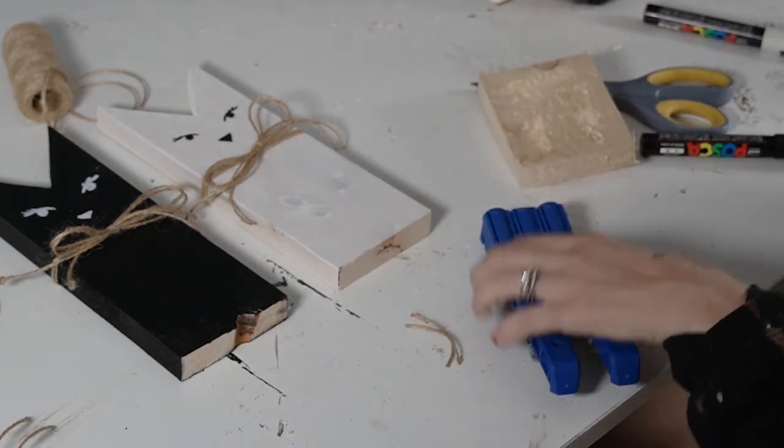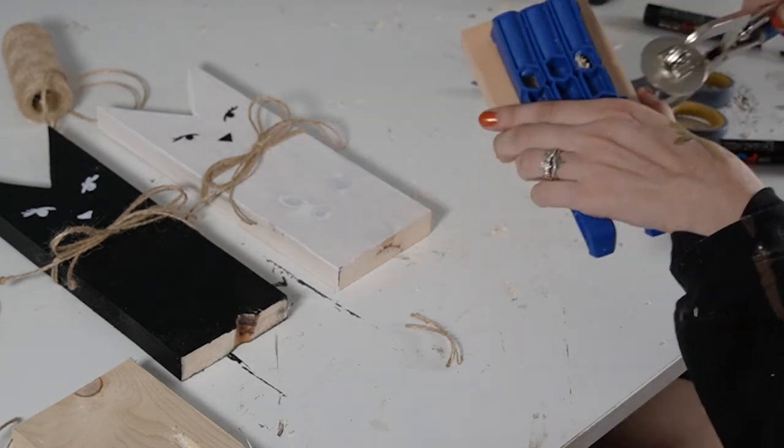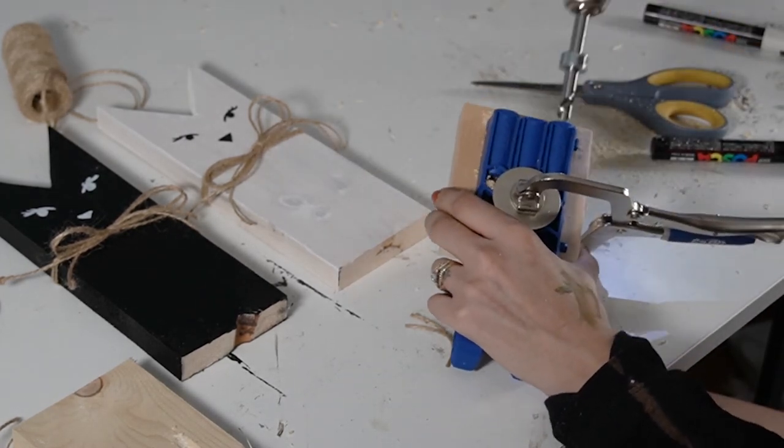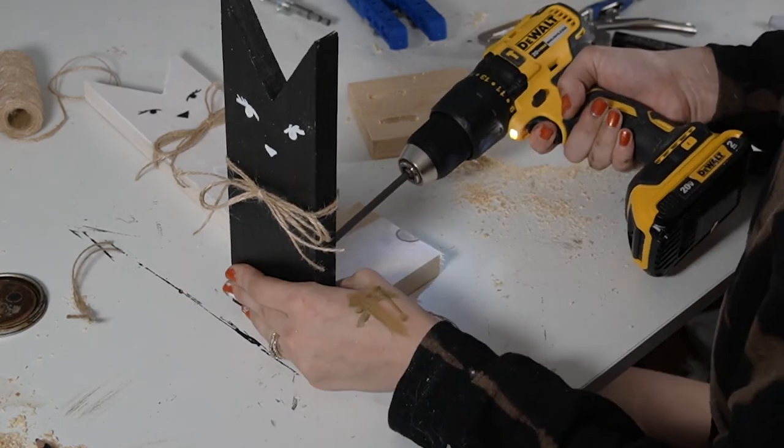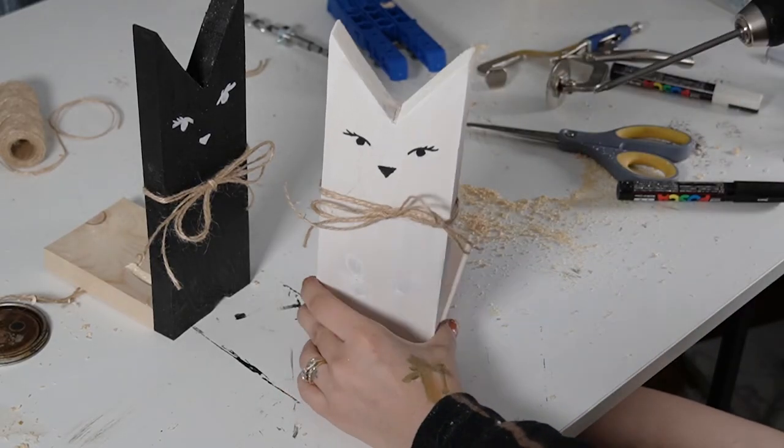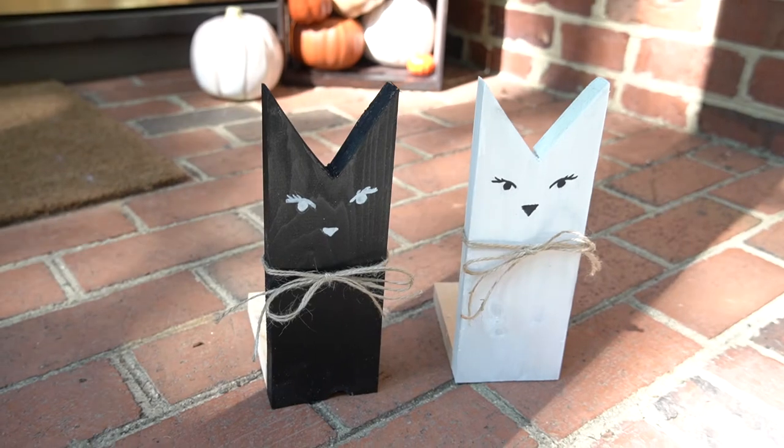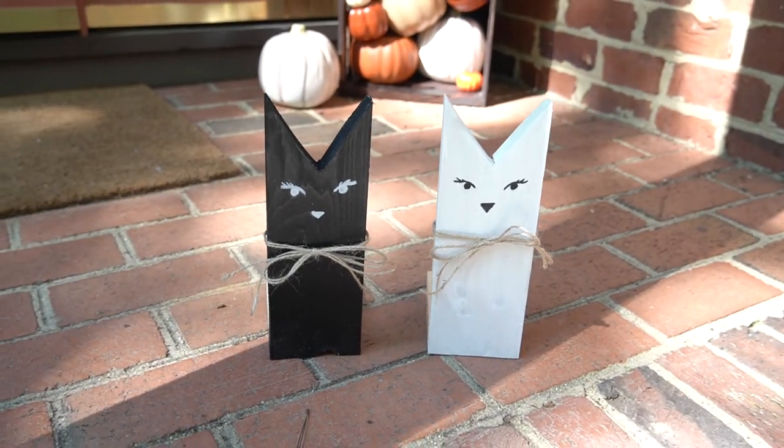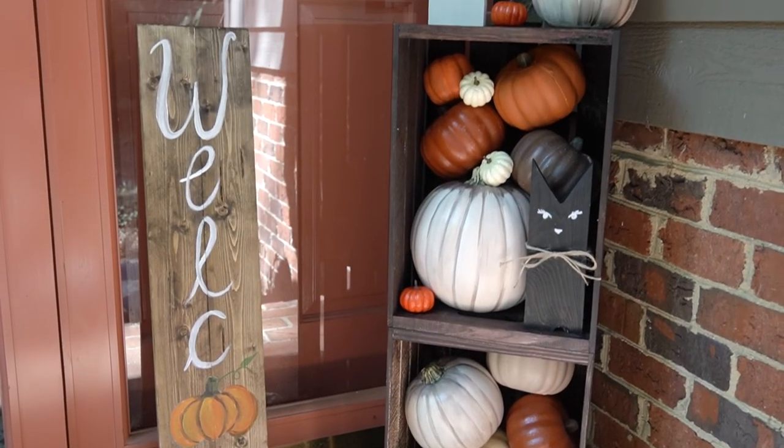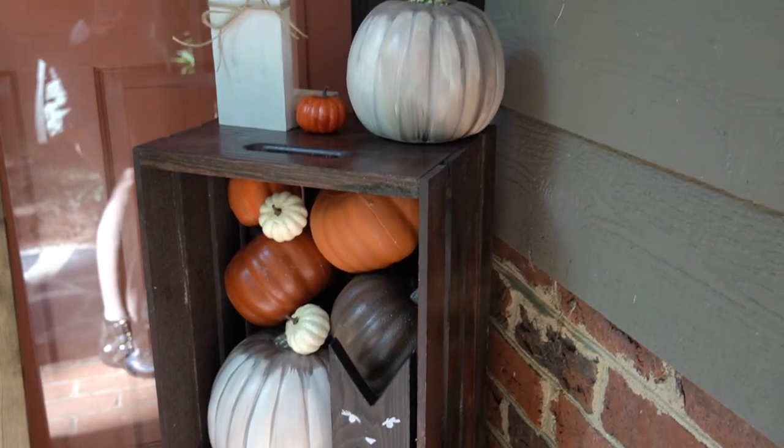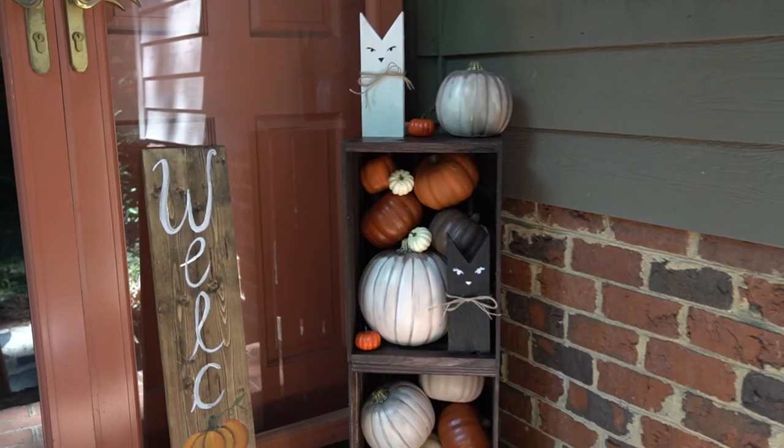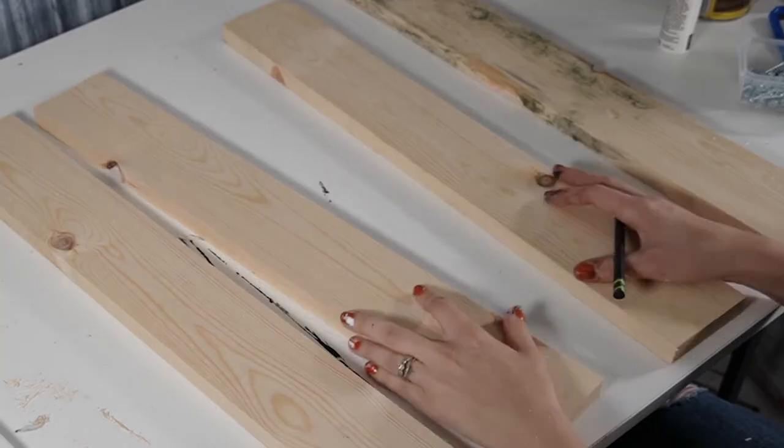And this part is optional because these pieces stand up on their own, but since mine are gonna be outside, I wanted to make them a bit sturdier. So I took those pieces that I cut at 3 inches, made two pocket holes in each one, and used that to attach them to the back of each cat. Okay, I know these were super easy, but I'm kind of obsessed with these things. They're so cute. I just wish the real Bonnie and Clyde were being as quiet and as still as these are.